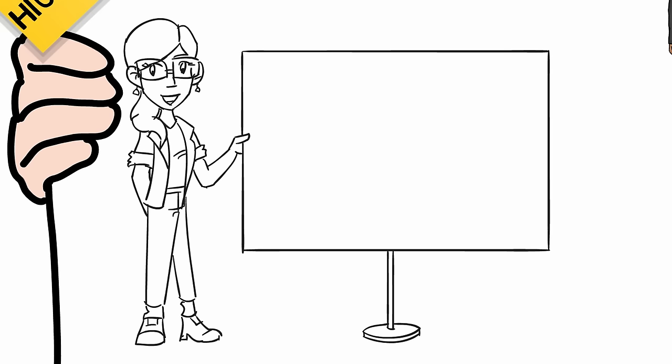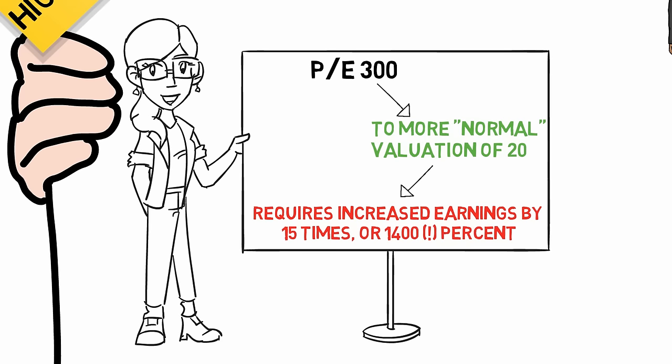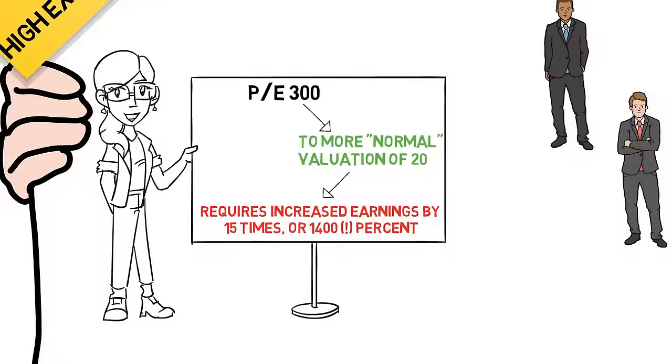Also, you realize that in order for Metflip to reach an average PE ratio of about 20, it would need to increase its earnings by 15 times, which is a huge increase. Especially if the company is large to begin with, and especially if the competition is increasing.